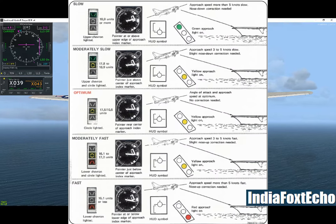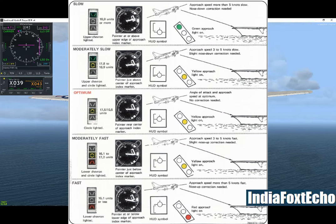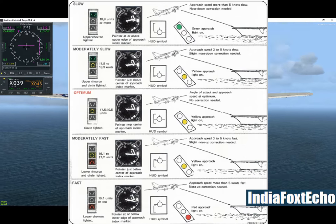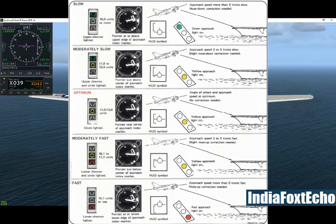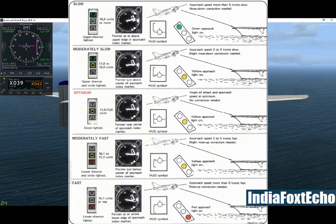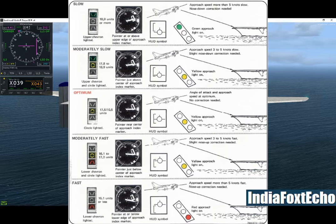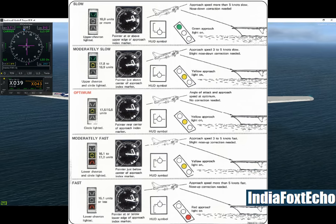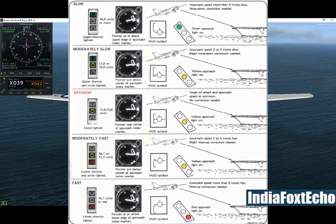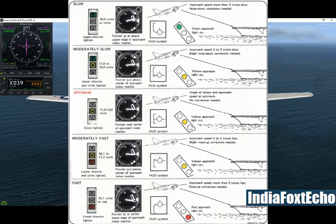On the approach, your throttle will not control speed — it will control the rate of descent. The trick is to try and keep your angle of attack constant so that your hook will capture the wire.